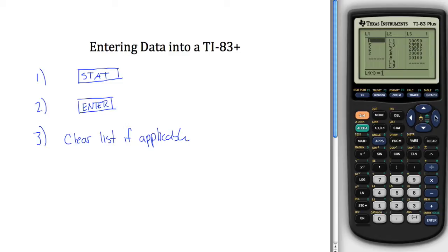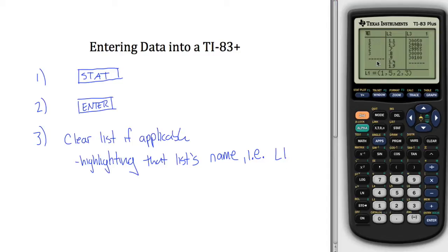So I want to clear out the data in L1. And then the way I do that is by highlighting that list's name, i.e. L1. So note, I was down here. I pressed up with my cursor to highlight L1 and now I can clear it out if you hit this button clear.